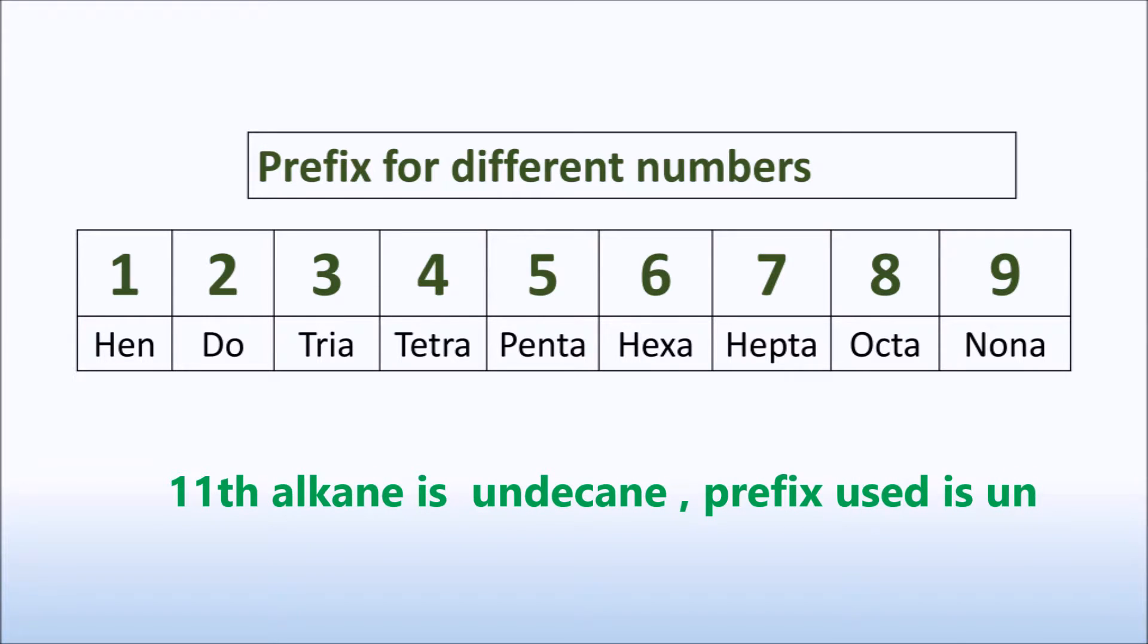For one, the prefix is hen, but in the case of 11 (undecane), we use un as the prefix. For two: do; three: tria; four: tetra; five: penta; six: hexa; seven: hepta; eight: octa; and nine: nona.